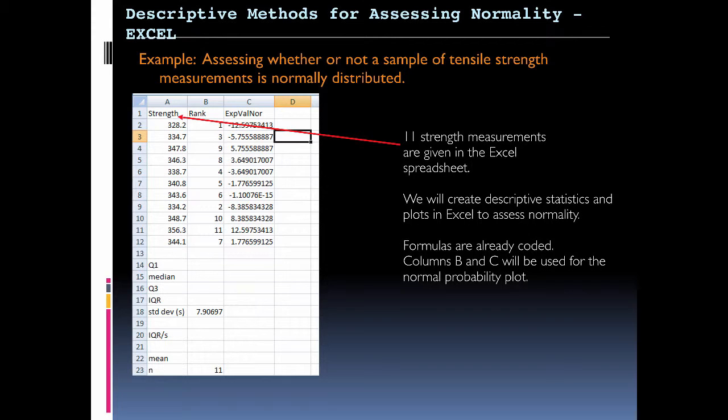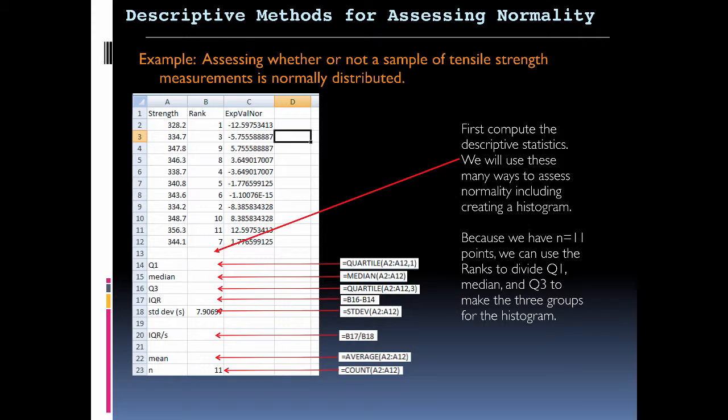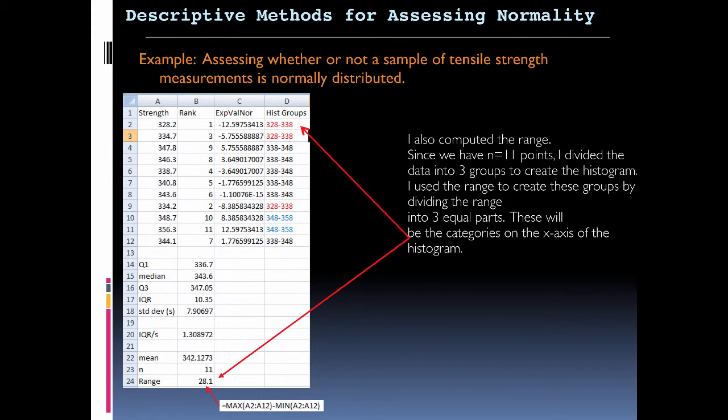So an example here, we've got 11 strength measurements, 2 through 12. These are the measurements that we're looking at here. And here is what these cells are representing once they're filled. Because we have 11 points, we can use the ranks to divide Q1, median, and Q3 to make three groups in the histogram.